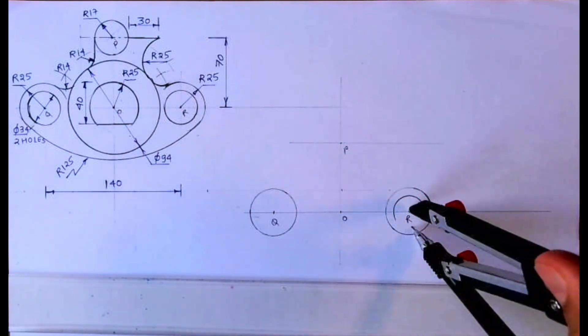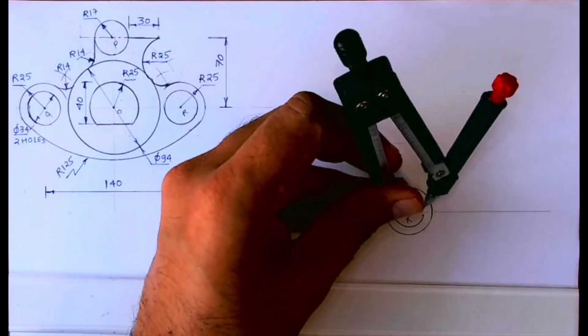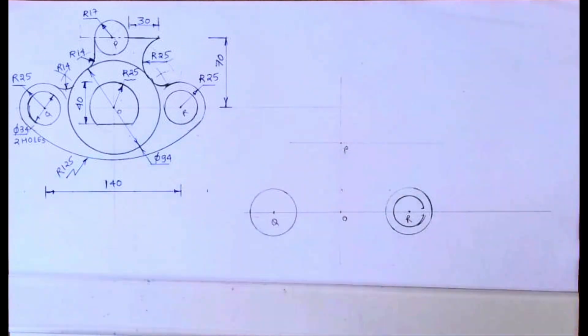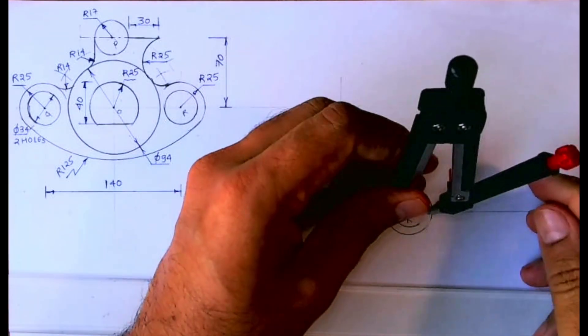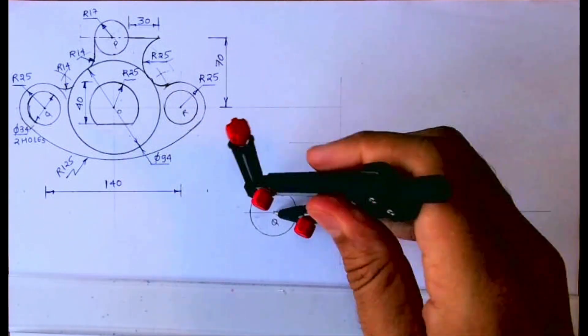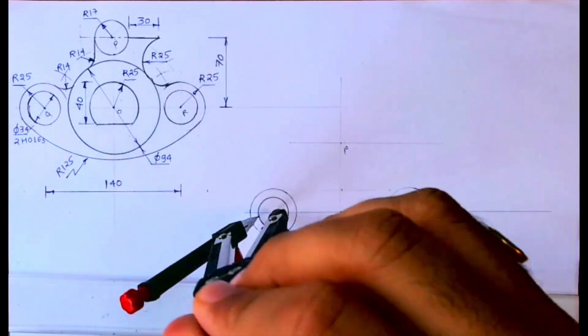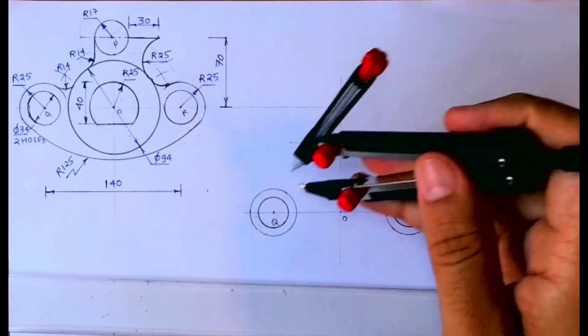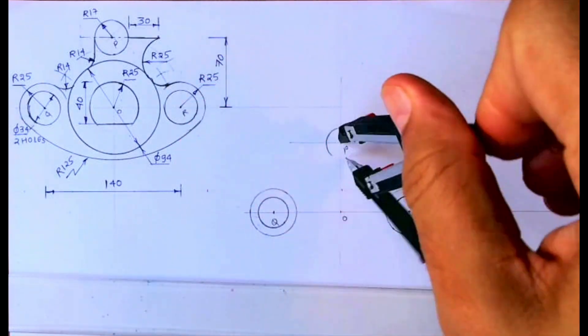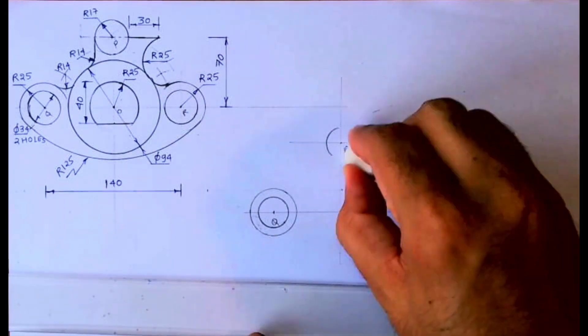Then inside we have diameter 34, so we can draw from Q and R. Now after this, from point P also we can draw radius 17. So there are three circles of radius 17.